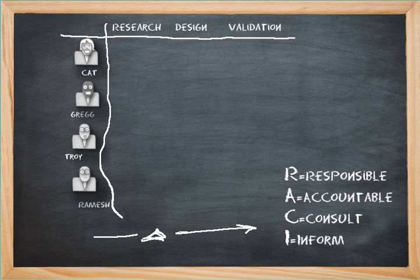At the beginning of a project, Cat's role is one where she is Responsible at the research period, so let's put an R right there. Greg's role at the research period is one of Accountable, and Troy's role is to be Informed, and Ramesh is also Responsible. So actually Ramesh is going to be responsible with Cat in the research phase of a project.